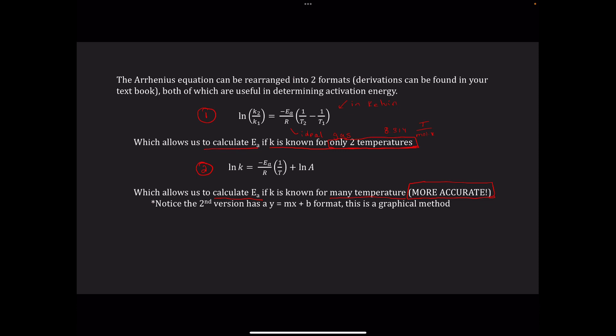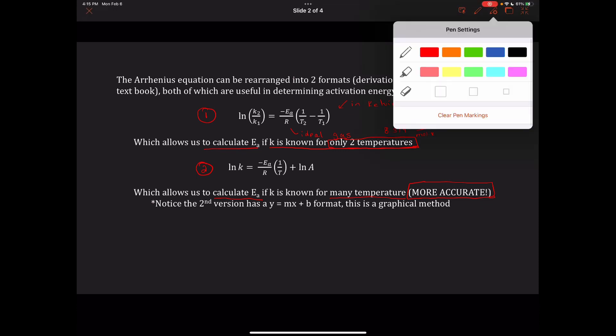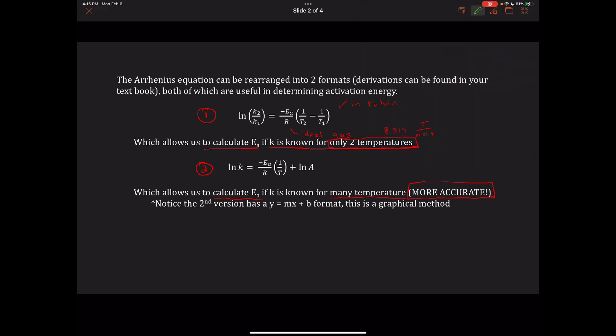Notice that this second version has a Y equals MX plus B format. Anytime something has that format, it's a graphical method, so we would use those multiple data points to create a graph. Graphs are going to give us a more accurate picture.